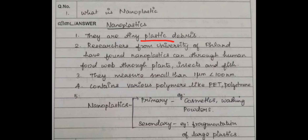Researchers from the University of Finland are talking about nanoplastic, the human food web — like plants, insects, fishes. They are talking about measurements and other polymers like PET and polystyrene. They are also talking about primary and secondary nanoplastics, with examples.